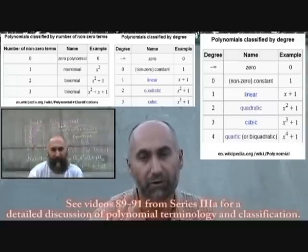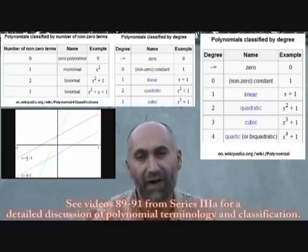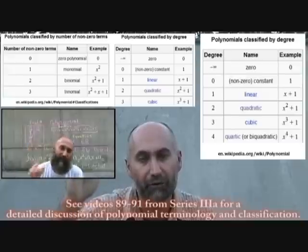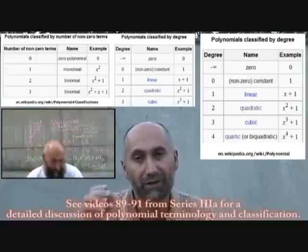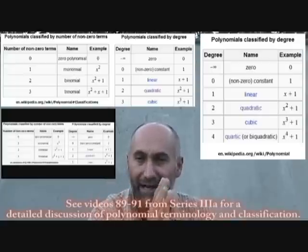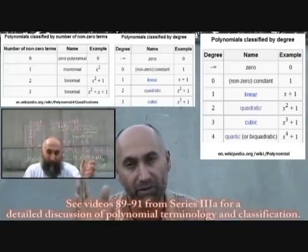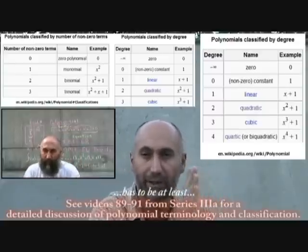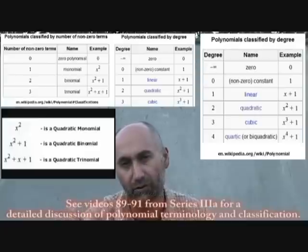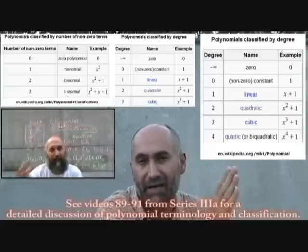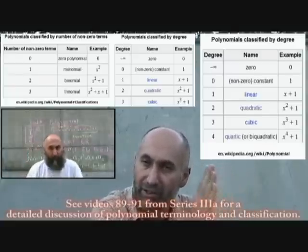Polynomials that are higher degree than degree two — polynomials that have more terms than three terms. As soon as you go beyond three terms you have to go to a degree of three or a degree of four or more. A trinomial has to be degree two, degree one, and a constant. As soon as you go to four terms, the largest term has to be degree three, then degree two, then degree one, then degree zero. Five terms starts with degree four.